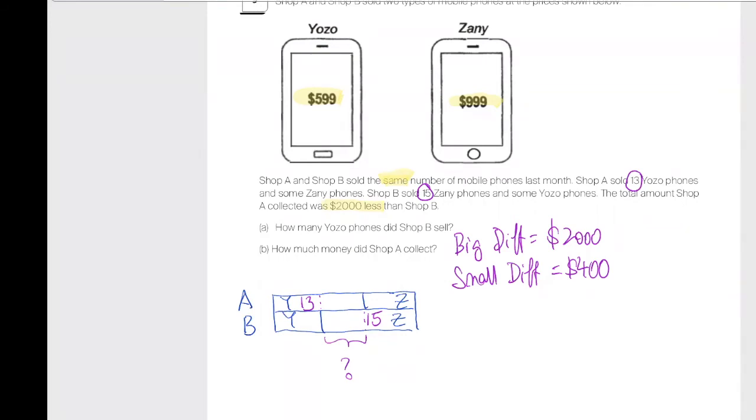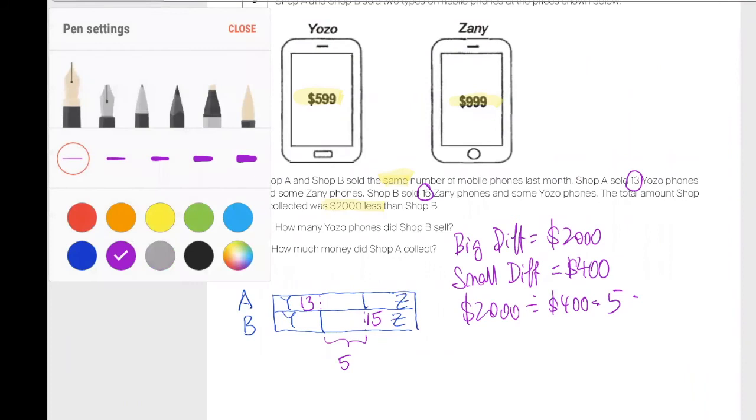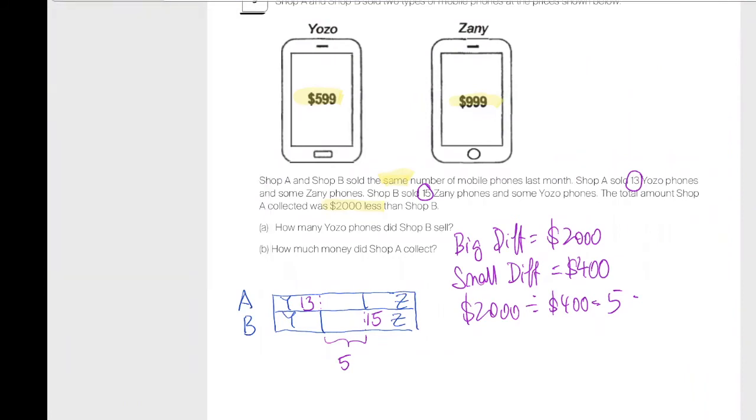Achimau, how many more Yozo phones did Shop A sell? 2,000 divided by 400. Yes, 2,000 divided by 400. When you take 2,000 divided by 400, you actually get 5, which tells you that this overlap here is 5. Why is this important? Because once you know that the overlap here is 5, you know that Shop A sold 5 more Yozo phones than B.